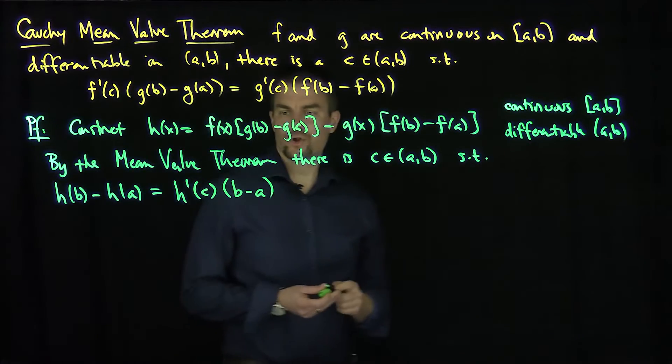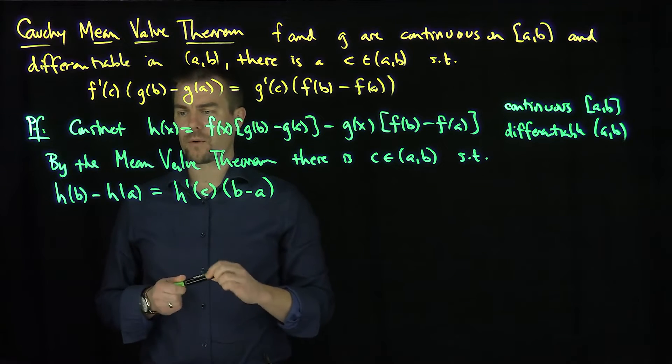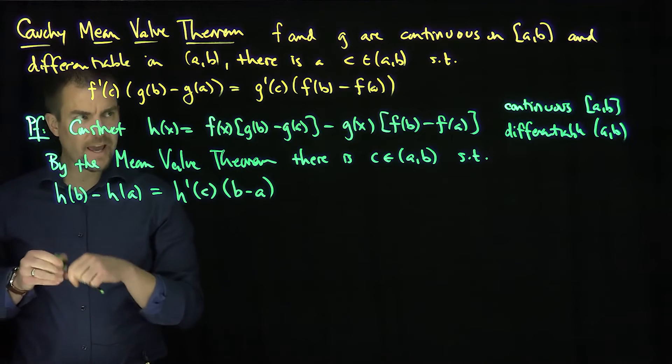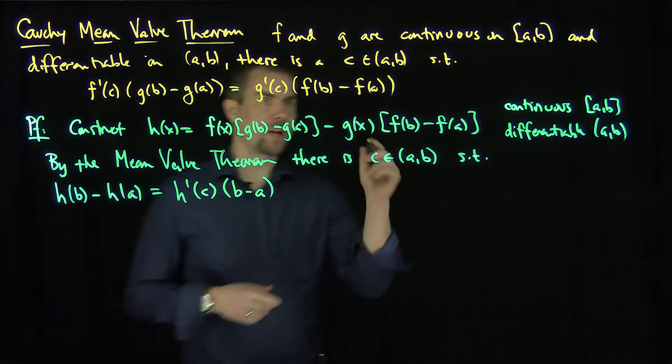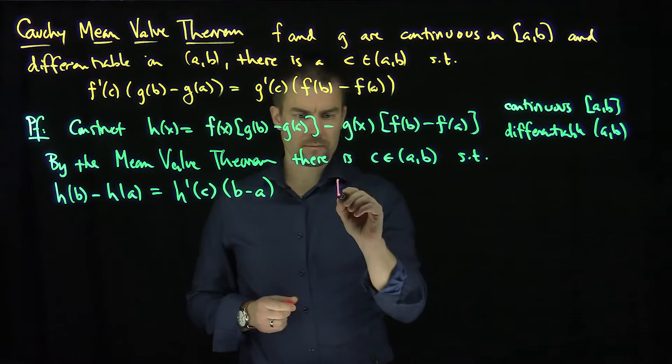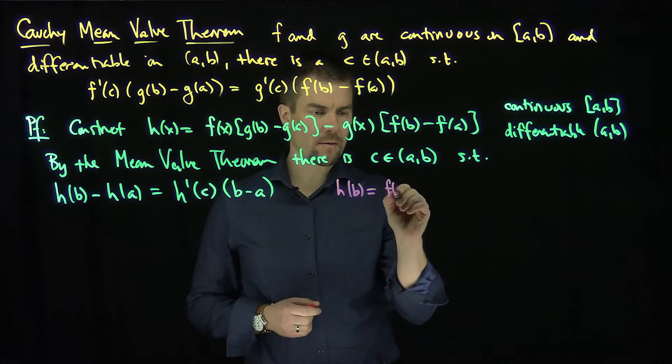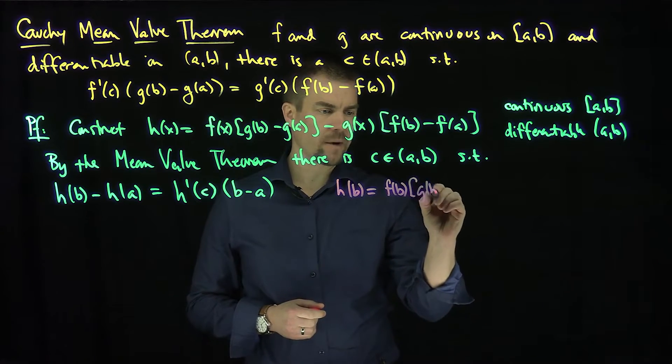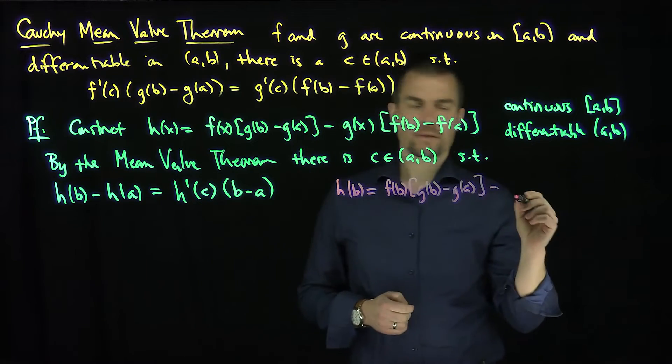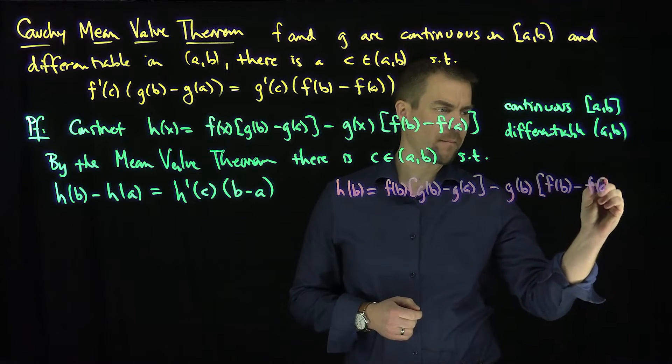So let's check what is, well, we know exactly what h'(c) is going to be as well, right? And so what's h(b) and h(a)? h(b), let's check out. So h(b) is going to be what? It's going to be f(b)[g(b) - g(a)] - g(b)[f(b) - f(a)].